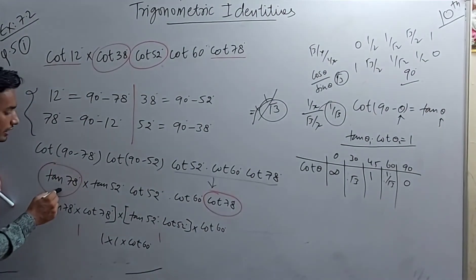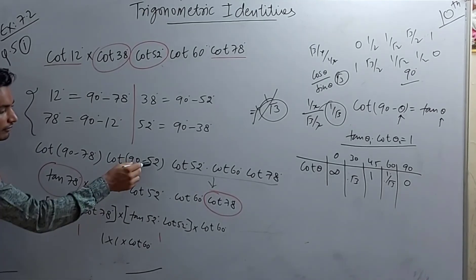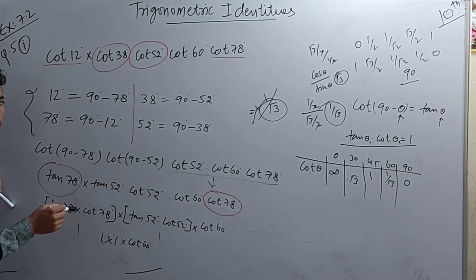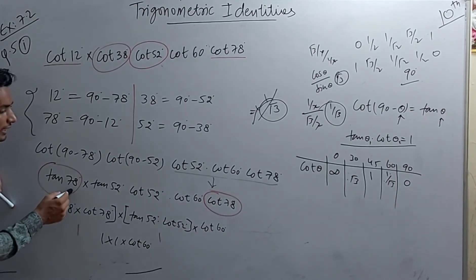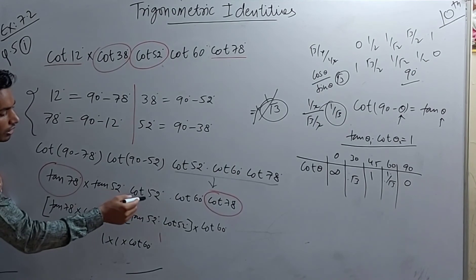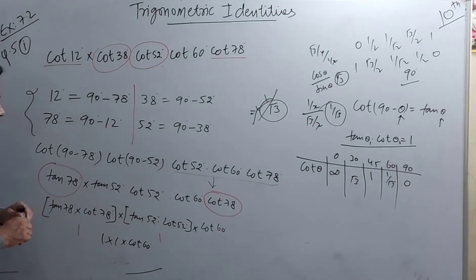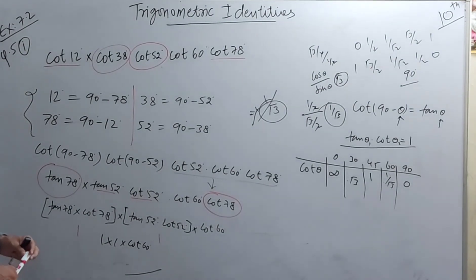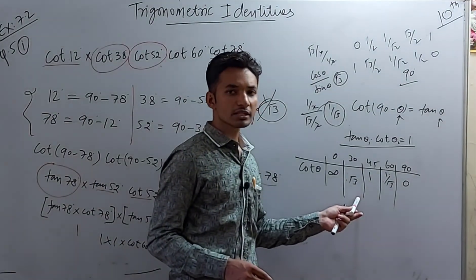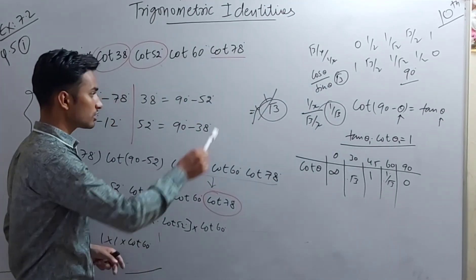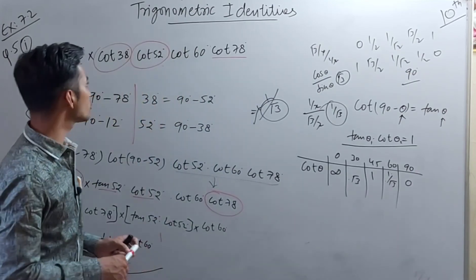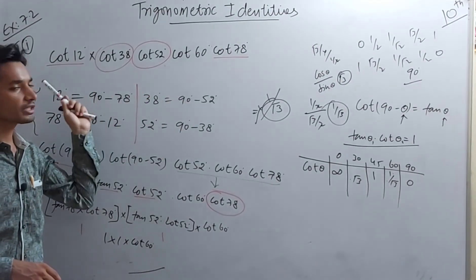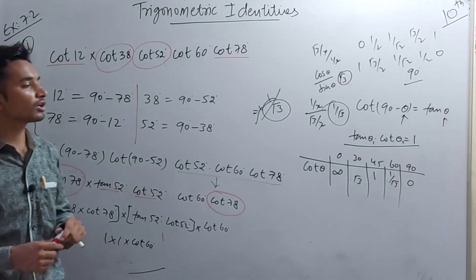To recap: we changed 38° to (90° - 52°) and used cot(90° - θ) = tan θ, with theta being 52° and 78°. Since tan θ × cot θ = 1, both pairs equal 1. The remaining term is cot 60°, which equals 1/√3. This completes the first part of question 5. Thank you students.